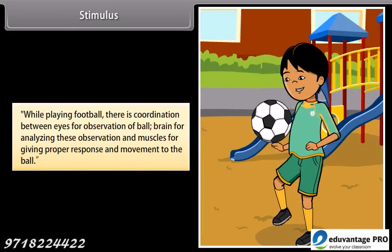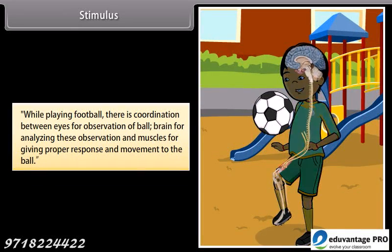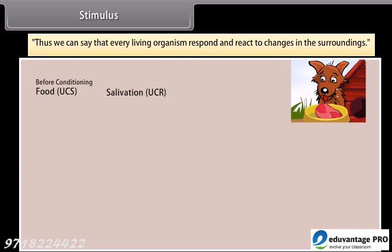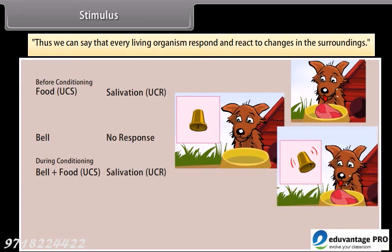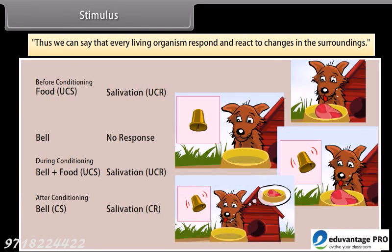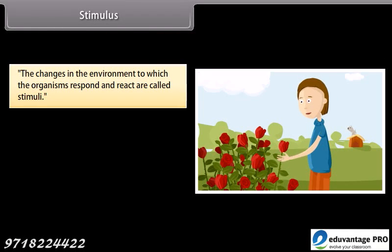While playing football, there is coordination between eyes for observation of the ball, brain for analyzing these observations, and muscles for giving proper response and movement to the ball. Thus, every living organism responds and reacts to changes in the surroundings. The changes in the environment to which the organisms respond and react are called stimuli.